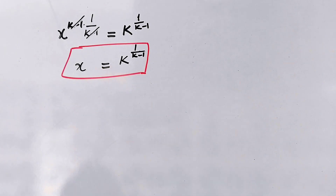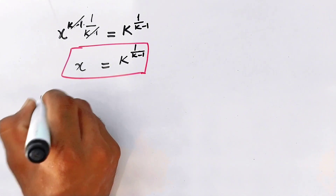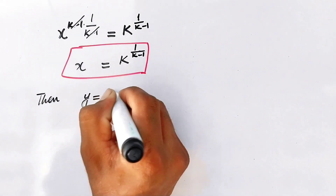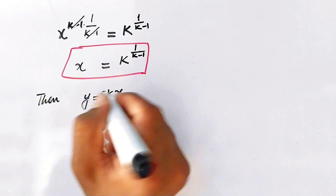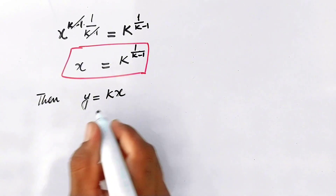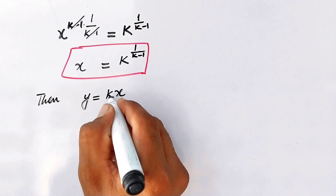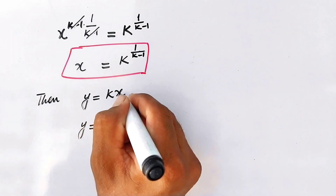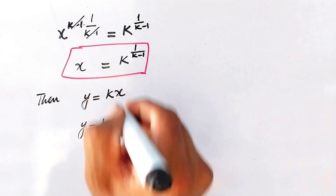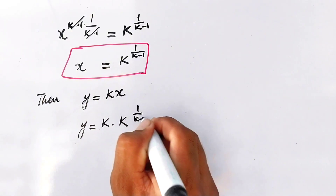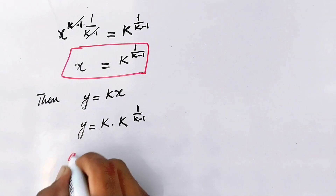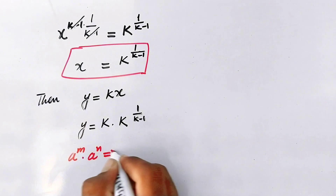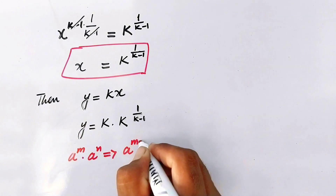Now we will find the value of y. As we supposed y equal to kx at the start, we will put the value of x in this equation. So it will become y equal to k times k raised to power 1 over k minus 1. Now we will use the exponential rule: a power m times a power n can be written as a power m plus n.